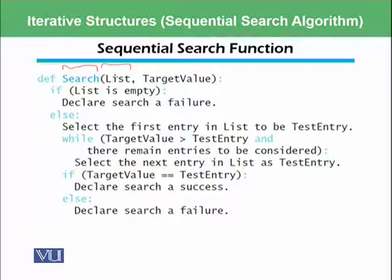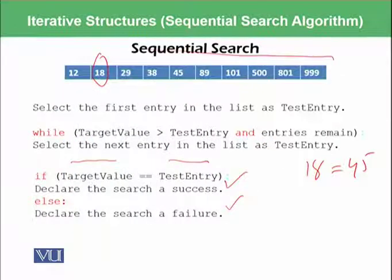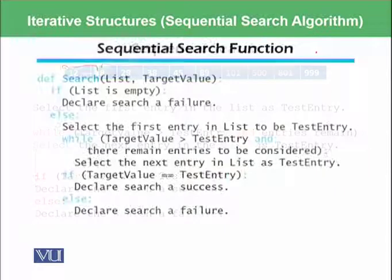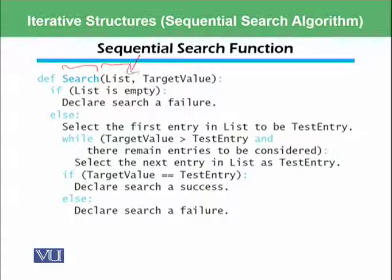This list contains all of the list which is available over here, so all of these numbers are basically going to this list. And then this target value which we have discussed, 45 in our previous example.